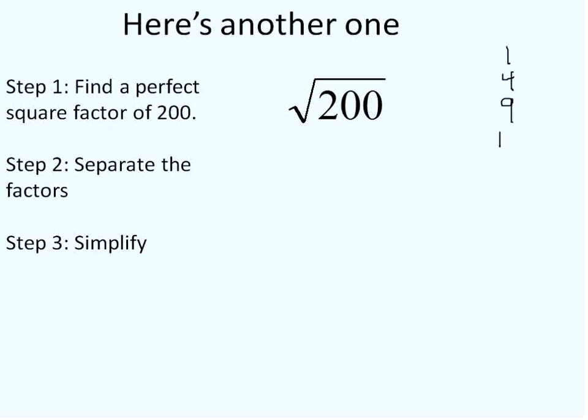I'm going to list the factors here. 1 times 1, 2 times 2, 3 times 3, 4 times 4, 5 times 5. Well, 25 is a factor of 200, as is 4. 4 is also a factor of 200. But I think that there's going to be a bigger one, so I'm going to continue. 6 times 6, 7 times 7, 8 times 8, 9 times 9, 10 times 10. Oh, there we go. 10 times 10 is 100.